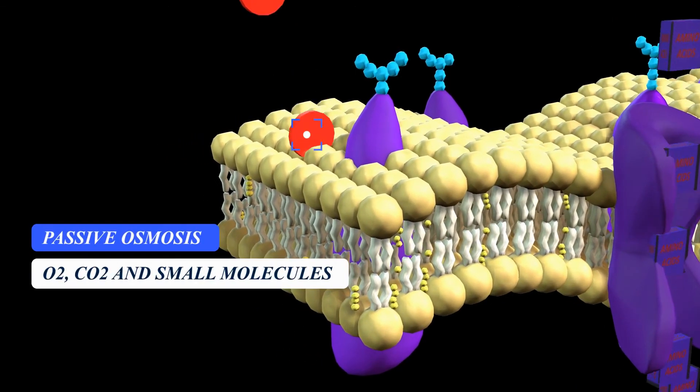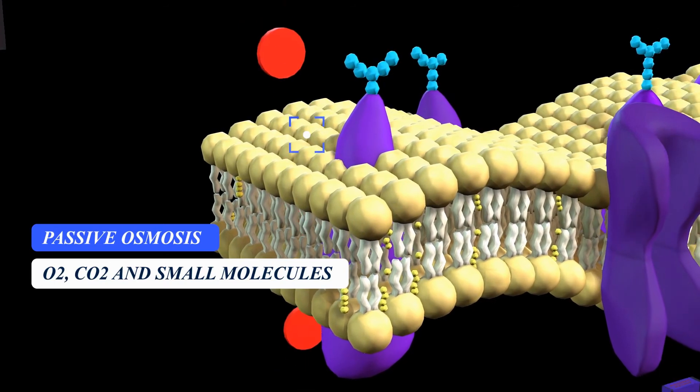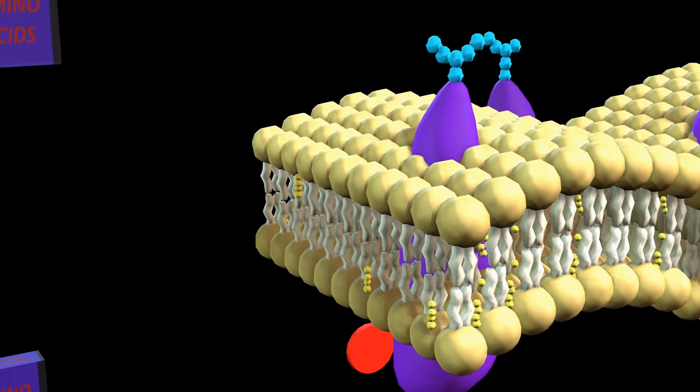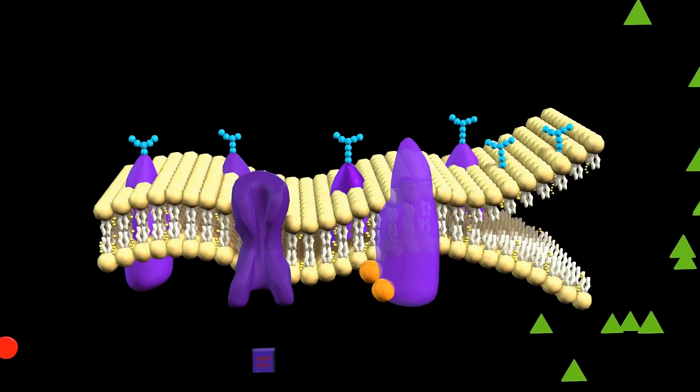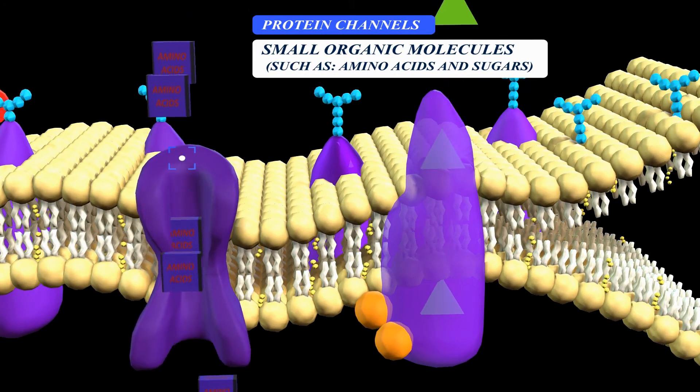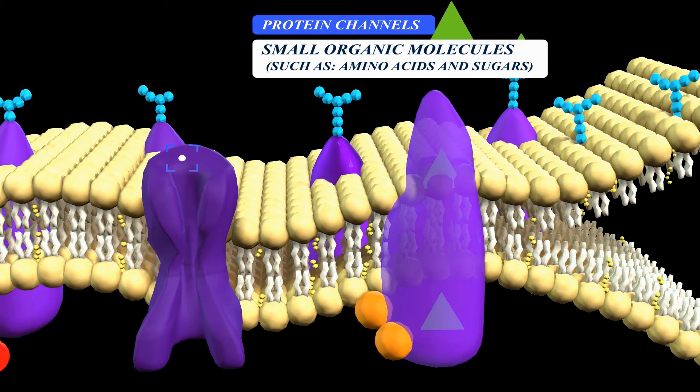Passive osmosis and diffusion transport gases such as O2 and CO2, and other small molecules and ions. Transmembrane protein channels and transporters transport small organic molecules such as sugars or amino acids.